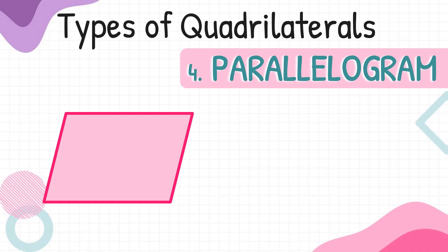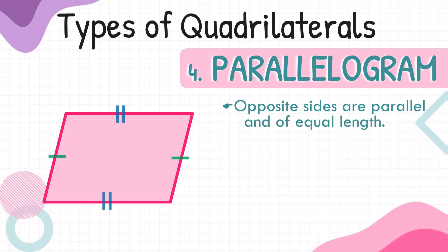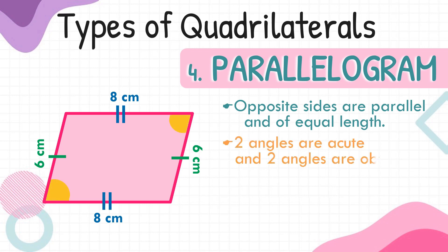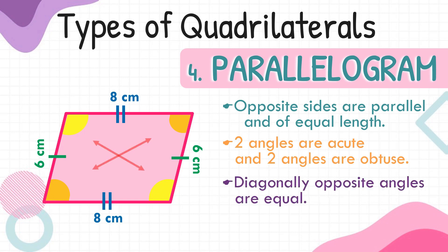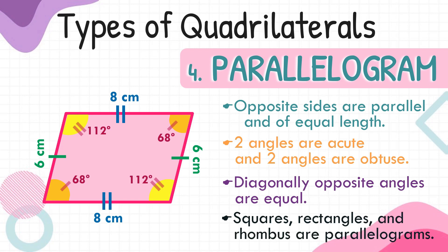Parallelogram is another type of quadrilateral, where opposite sides are parallel and of equal length. If one side is 6 centimeters long, then the opposite side also measures 6 centimeters. If the upper base is 8 centimeters, then its opposite lower base is also 8 centimeters. Just like the rhombus, opposite angles of a parallelogram are diagonally equal — if one angle measures 68 degrees, its opposite also measures 68 degrees; if another measures 112 degrees, its opposite also measures 112 degrees. Squares, rectangles, and rhombus are all kinds of parallelogram because they have pairs of parallel sides.